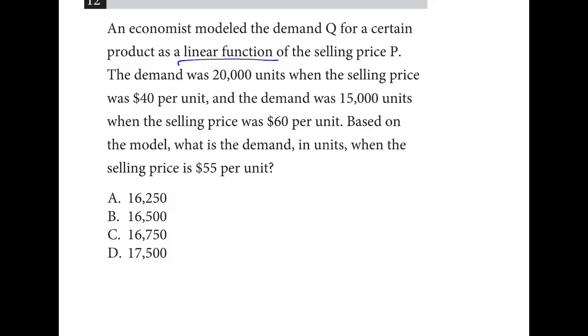So we have a linear function, demand Q based on selling price P. So when the price was $40 a unit, the demand was 20,000. When the price went up to $60, we'll put that over here, the demand went down to 15,000. And this is the linear relationship. As the price goes up, the demand goes down.